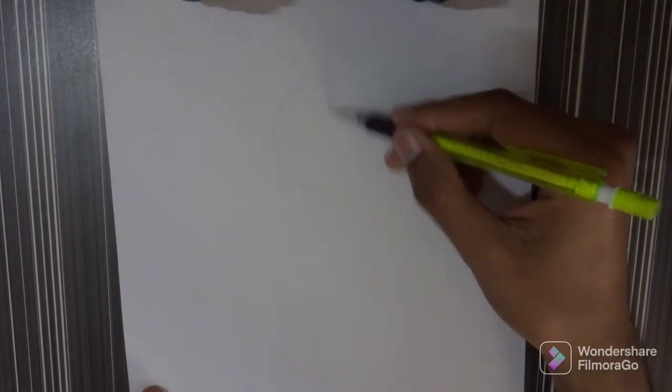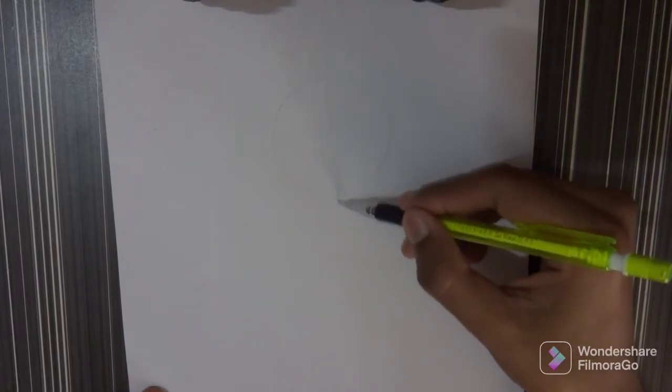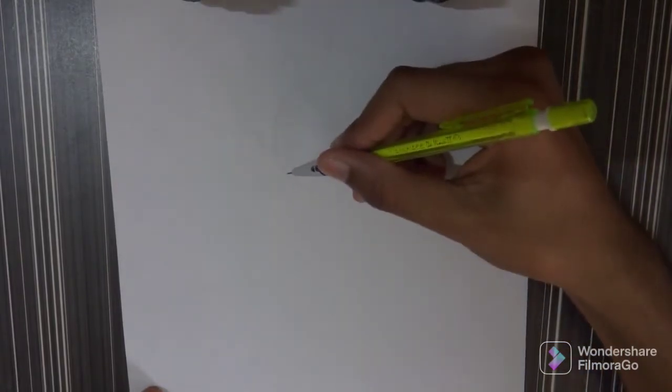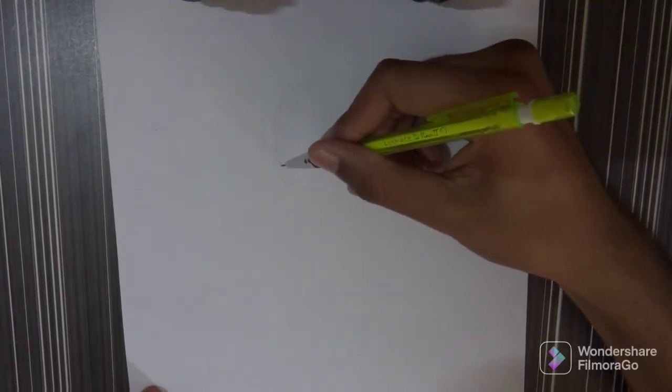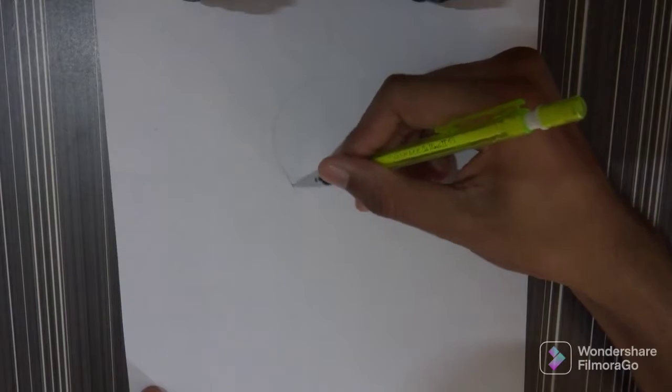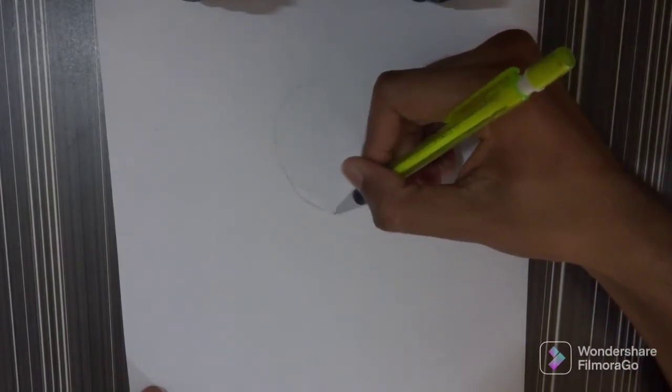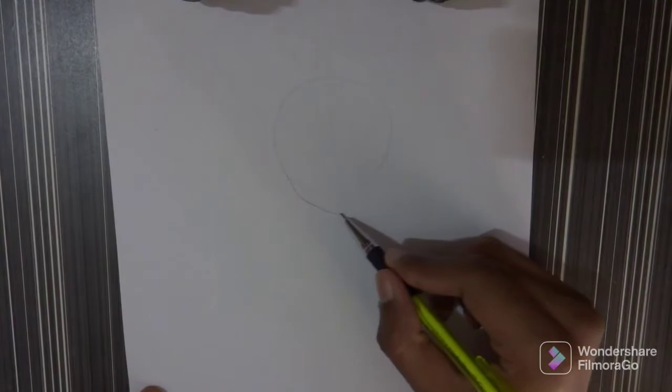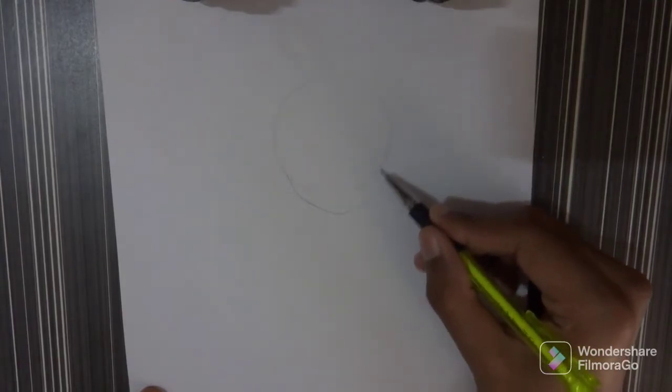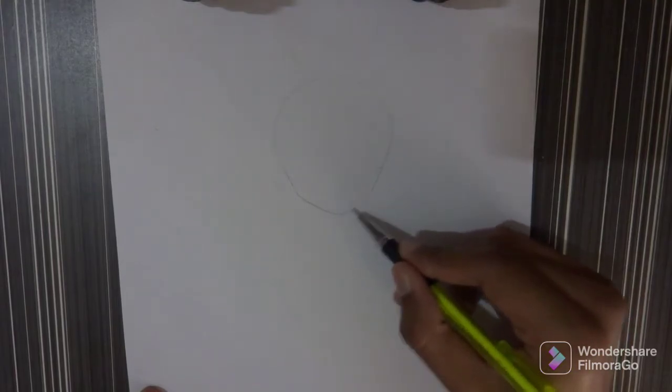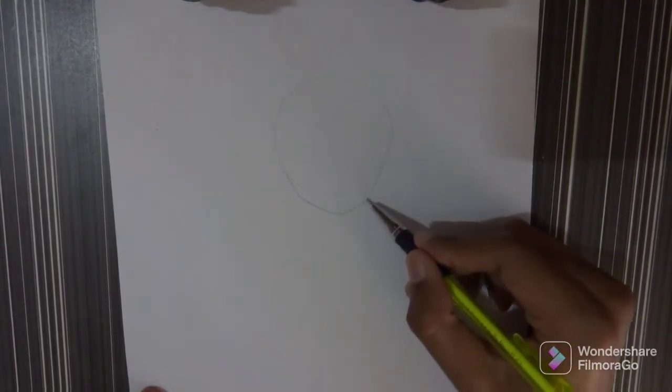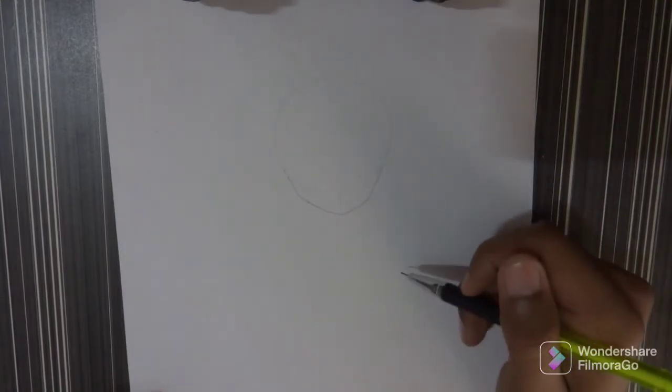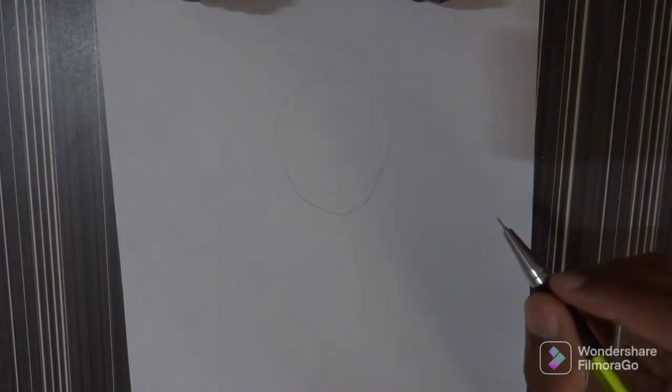And then we have to draw a line dividing the circle into two halves from the middle like this and stop it here. We'll draw cheeks from here like this, and the same goes for the other side. So this one's quite messed up, let's just erase it and do it again.